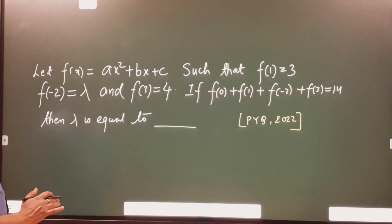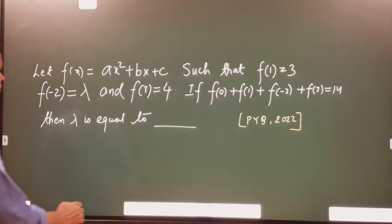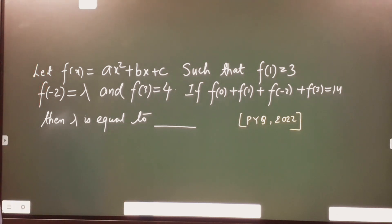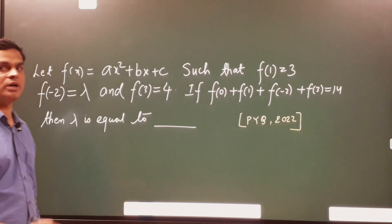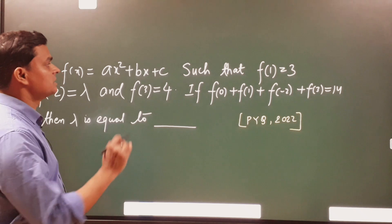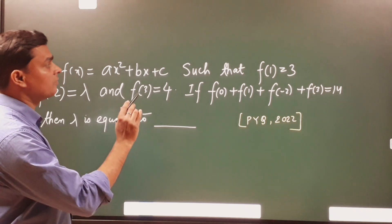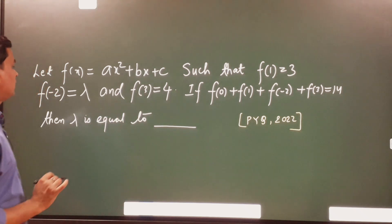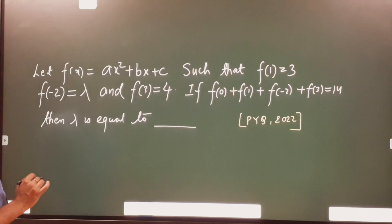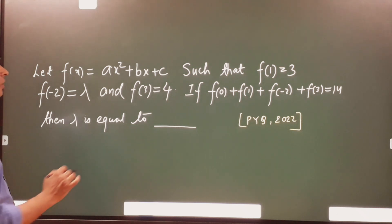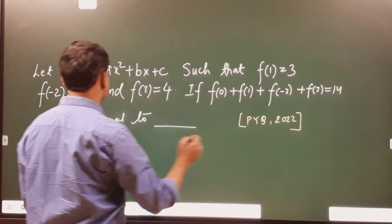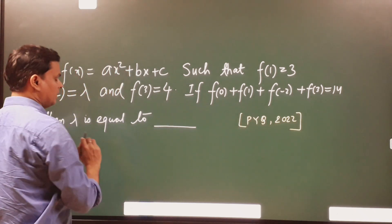The question states that let f(x) = Ax² + Bx + C such that f(1) = 3, f(-2) = lambda, and f(3) = 4. A condition is given and then it is asking the value of lambda.